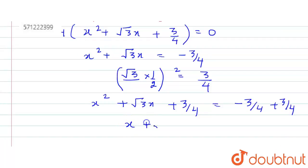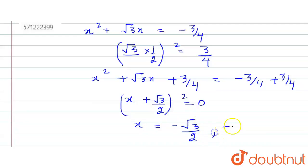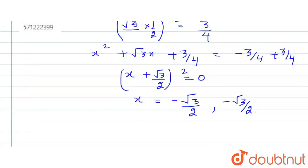On the left hand side we have completed the square: (x plus √3/2)² equals 0. So the value of x — because the equation was quadratic, they have equal roots — both roots are equal to x = minus √3/2. These are the two equal roots of the given equation.